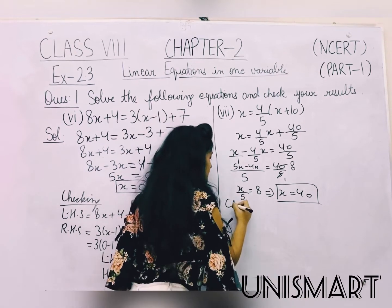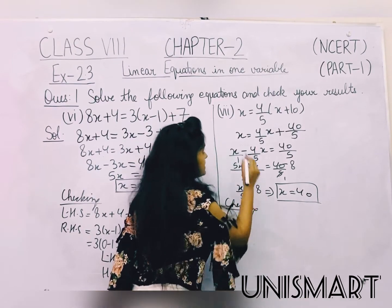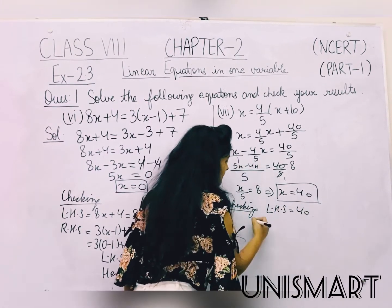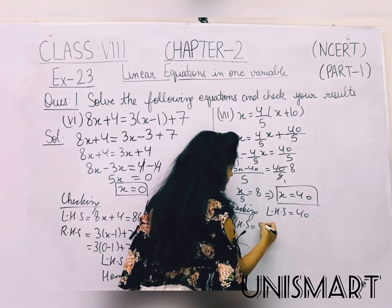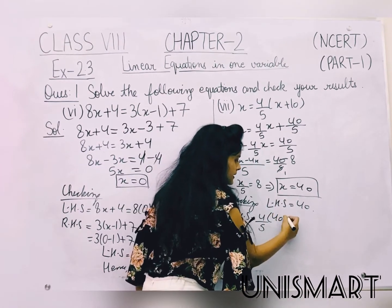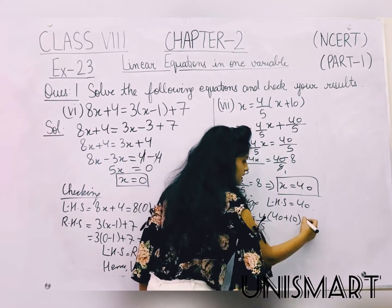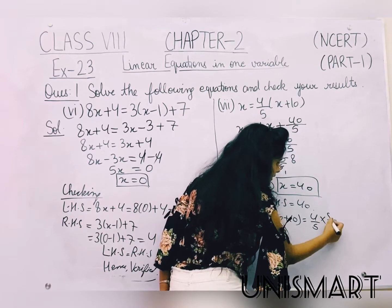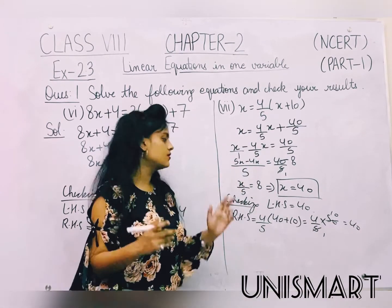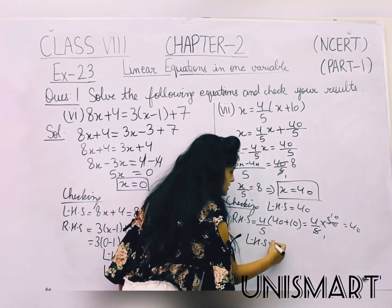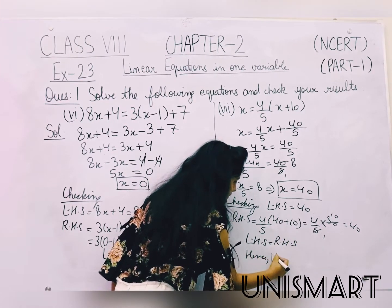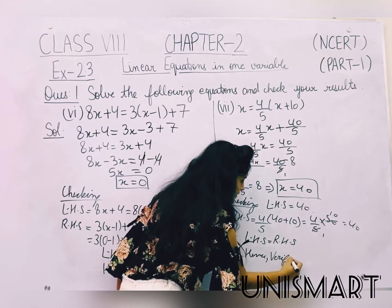Now we do checking. LHS is x, which is 40. RHS is 4 by 5 multiplied by (x plus 10). Substituting x as 40: 40 plus 10 is 50, so 4 by 5 into 50. The 5s cancel out giving 4 into 10, which is 40. LHS and RHS are both equal to 40. LHS is equal to RHS. Hence verified.